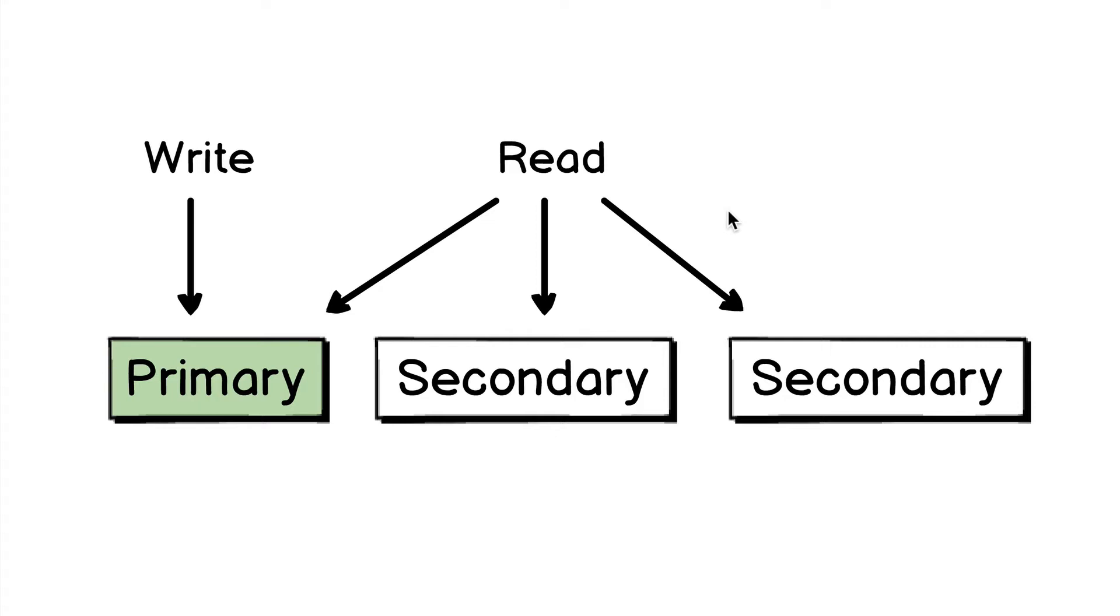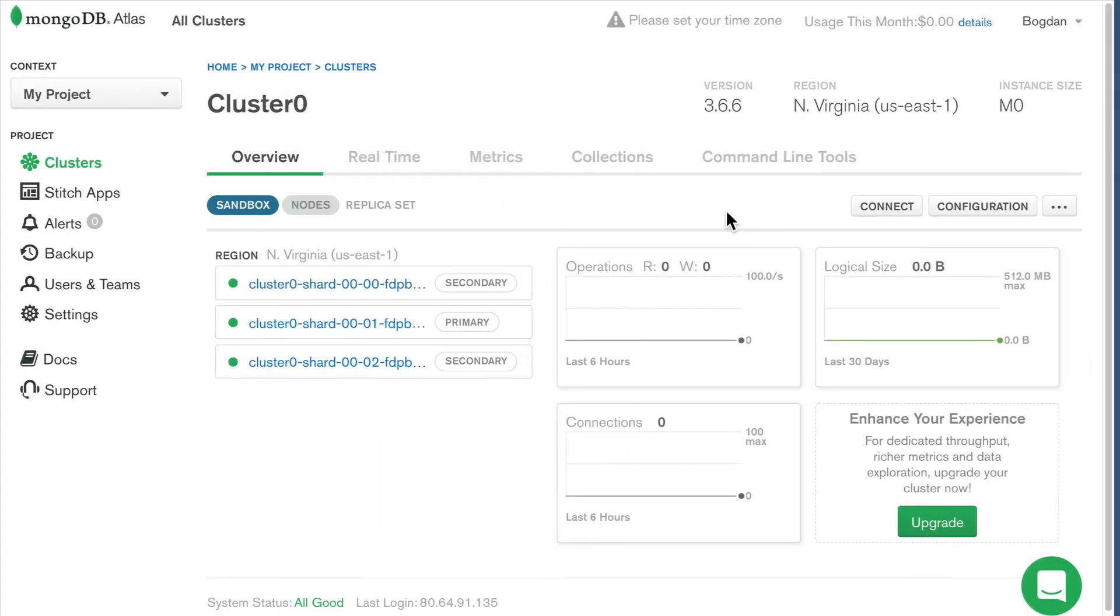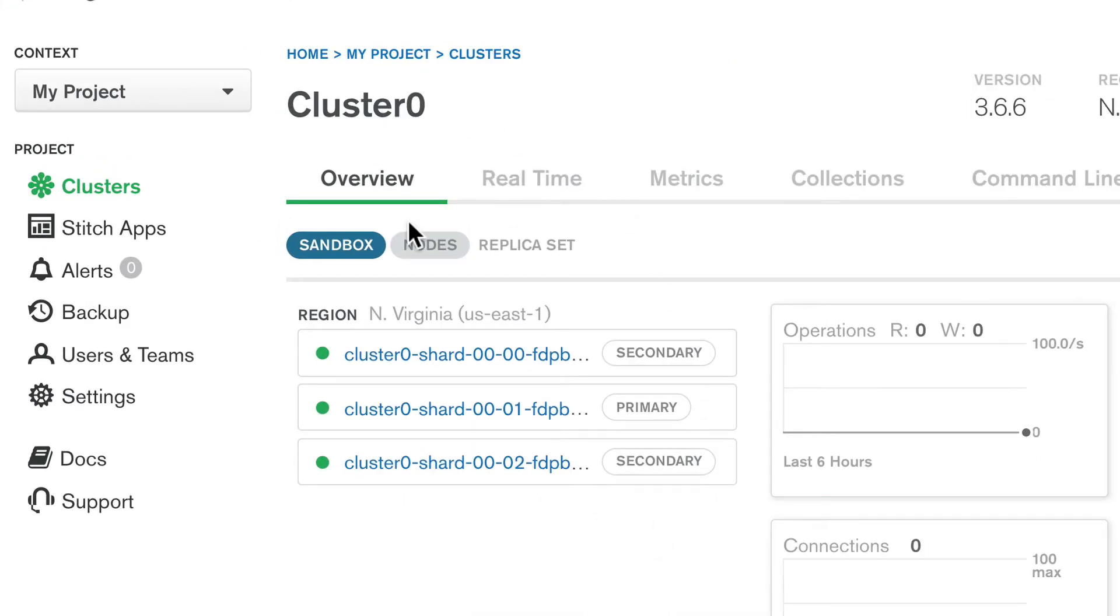Remember that at the beginning of the course, I showed you an example of the MongoDB Atlas setup. Let's get back to it. Here it is. Here is my cluster, and the cluster consists of three servers.